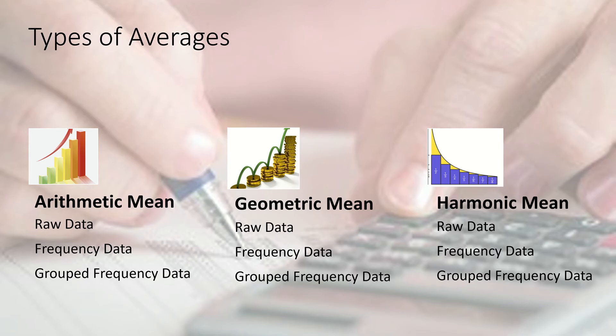If the data has arithmetic behavior, arithmetic mean is a good representation of the data. We'll be talking about finding arithmetic mean when we have raw data (unorganized data), which happens when we have small data in size. We'll also learn how to find arithmetic mean when data has a frequency but no groups or classes, and when the data is grouped frequency data.